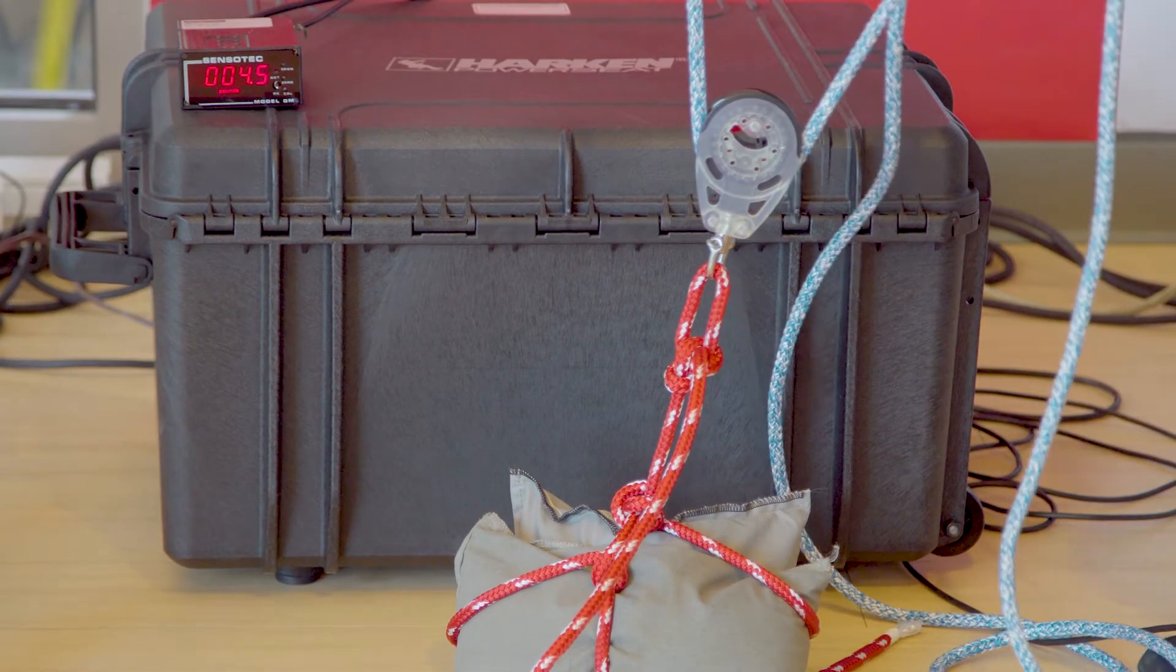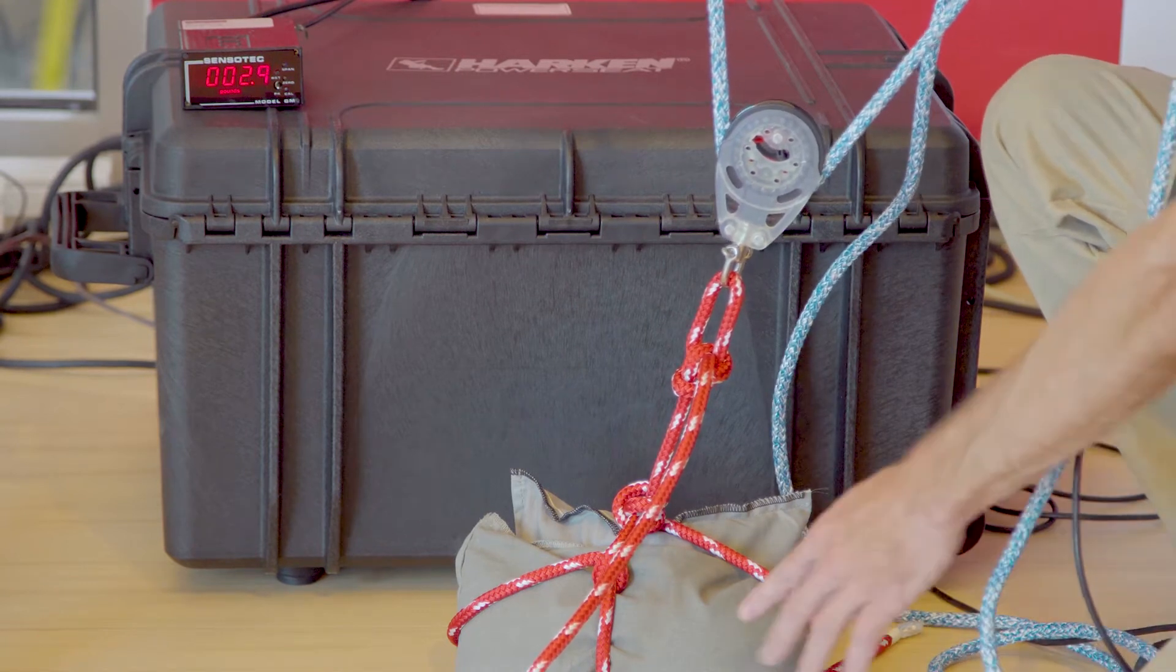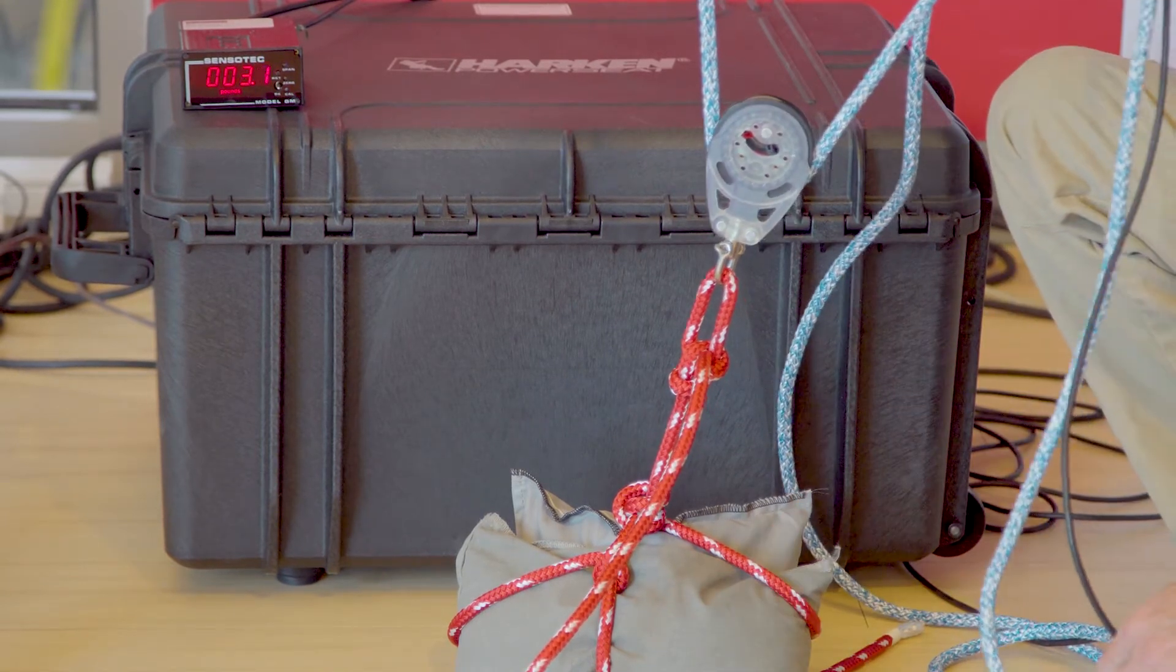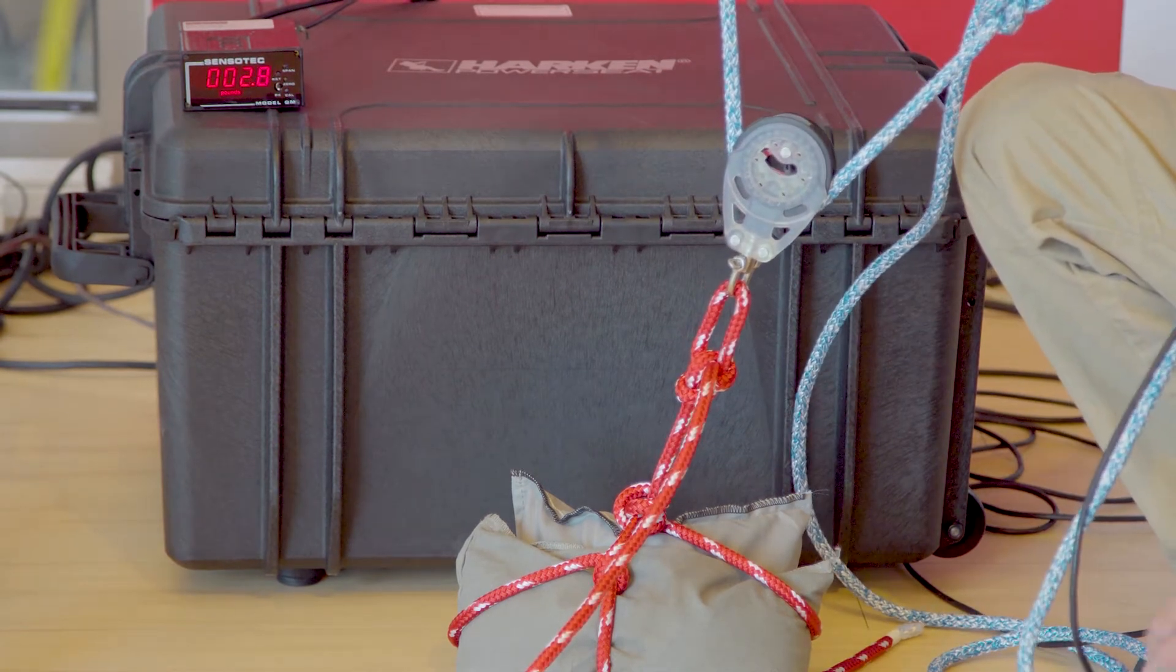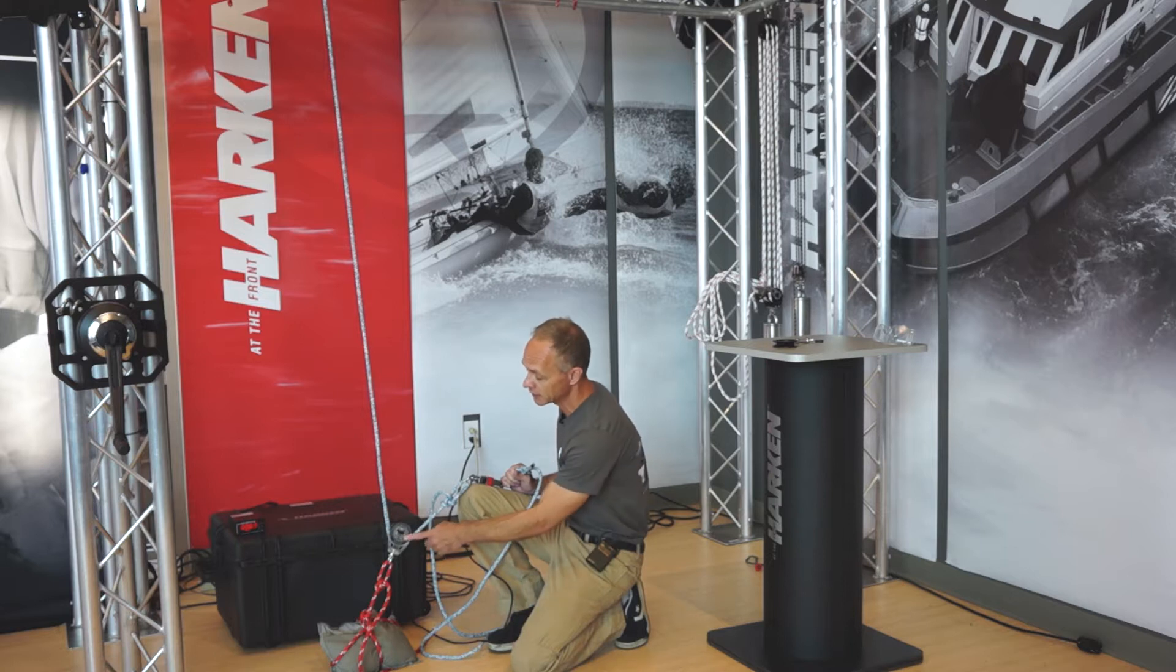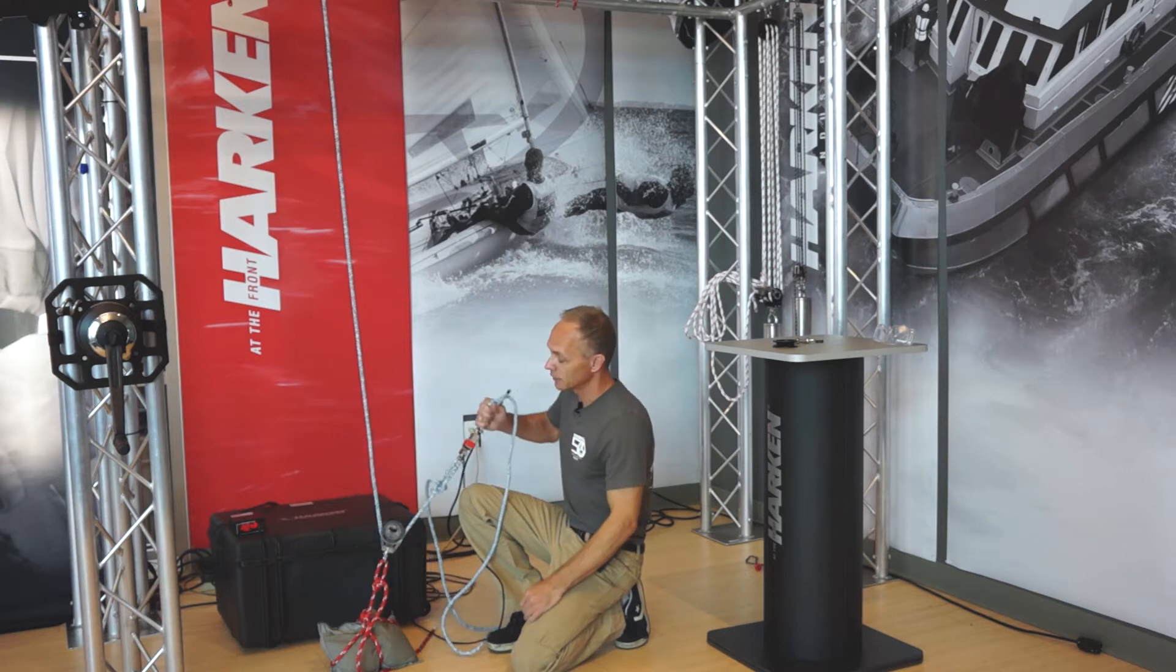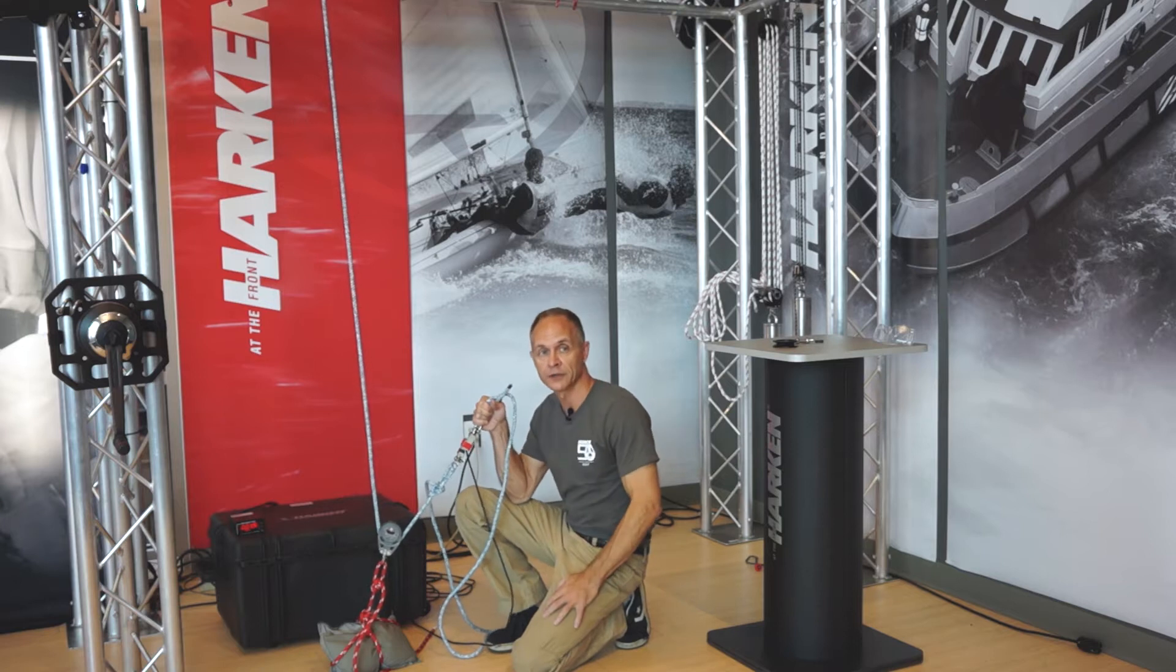We're going to demonstrate how a ratchet block works today using this setup where I've got about 50 pounds of lead bags on the floor attached to the head of this block. This is a 75 millimeter carbo ratchet block with a special clear side plate so that you can see how the mechanism works a little bit later on. I have a sheet dead end into the tube on the top and one going to my hand. Also attached here is what we call a load cell which measures my effort into the system.